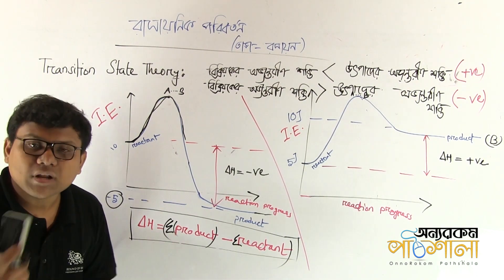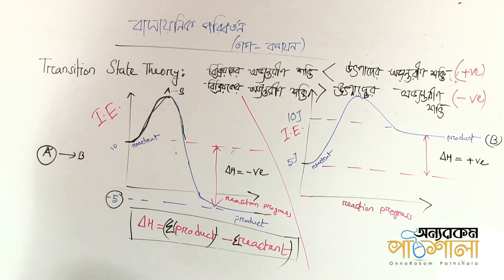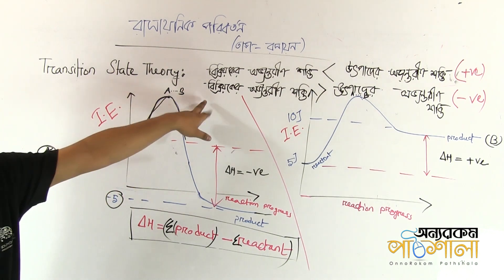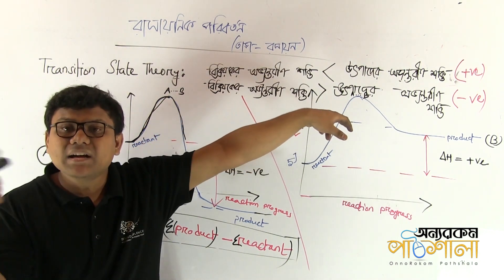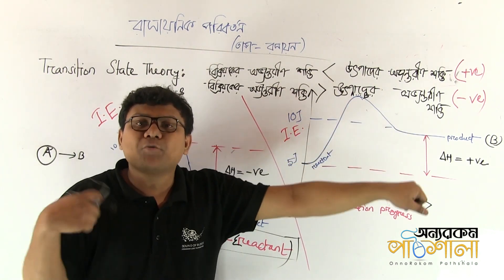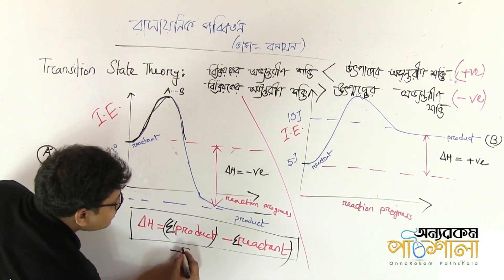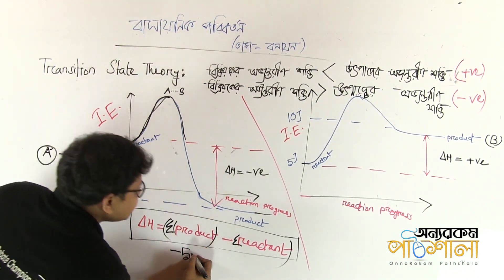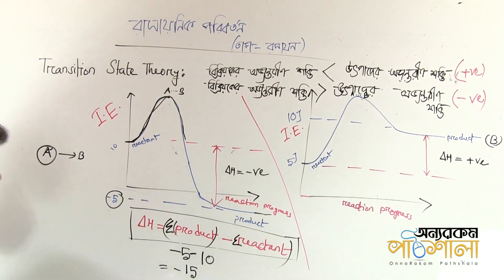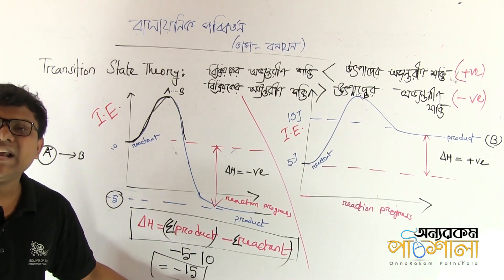What is enthalpy? Heat — total heat, total energy, internal energy. Del H equals the product energy minus the reactant energy. That means minus 5 for the product energy and 10 for the reactant energy, giving minus 15. The del H value is negative.